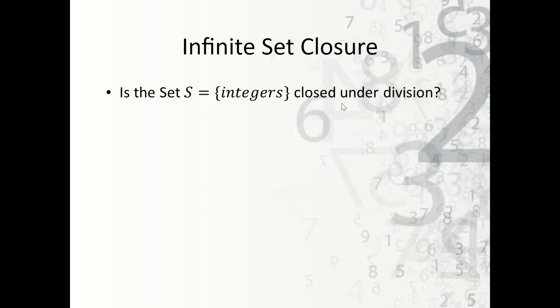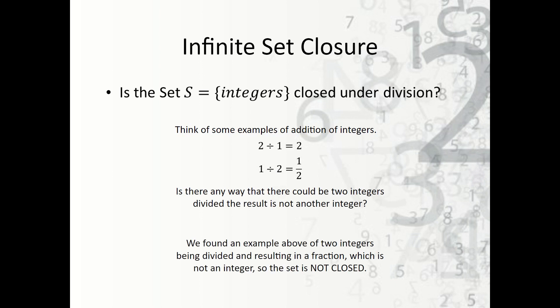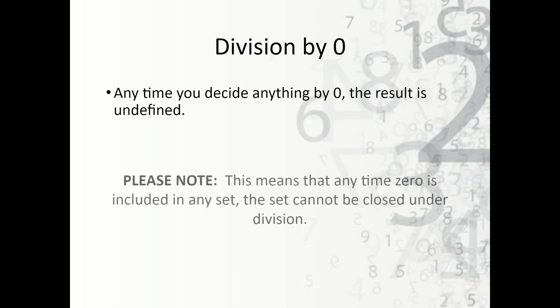What about the set of integers closed under division? When we try 2 divided by 1 we get an integer, but 1 divided by 2 gives one-half, which is not an integer — it's a rational number. So the set is not closed. An even quicker way to see this: since zero is an integer, dividing by zero is undefined, which immediately tells us the set of integers is not closed under division.